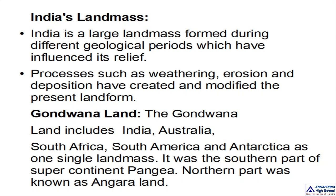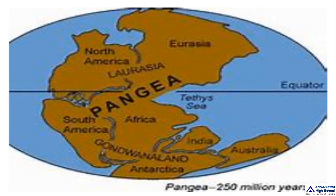The northern part of Pangaea was known as Angara land. So there were two important landmasses: Gondwana and Angara. In this picture you can see the supercontinent Pangaea — India is also part of that Pangaea. Some 250 million years ago, we had this single continent, this single landmass.